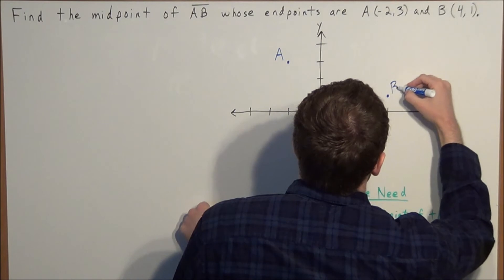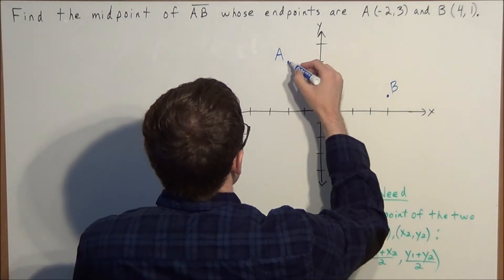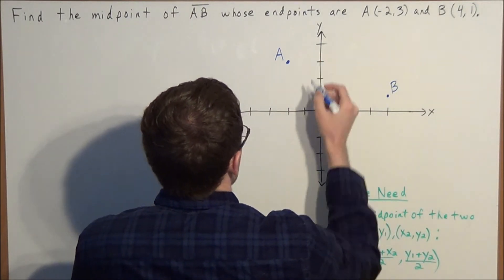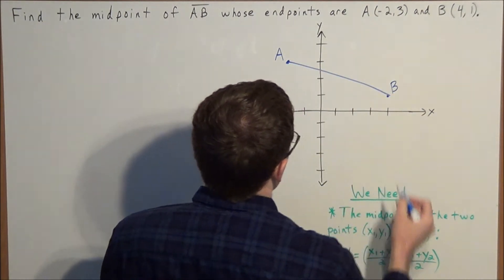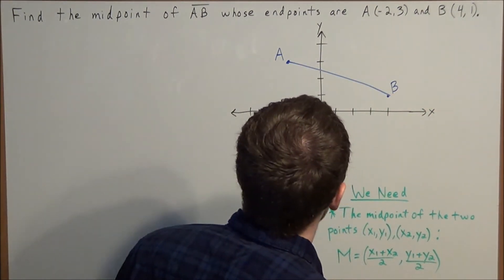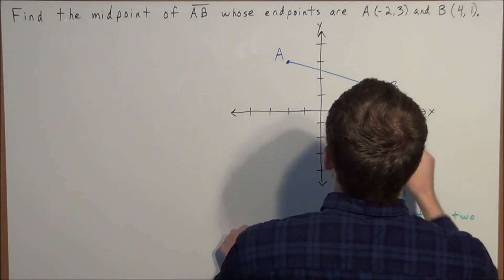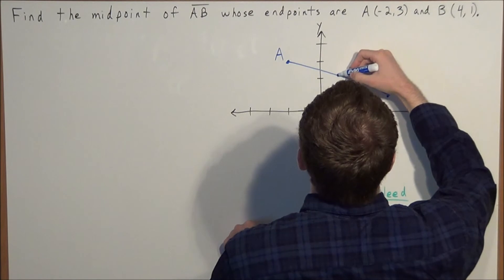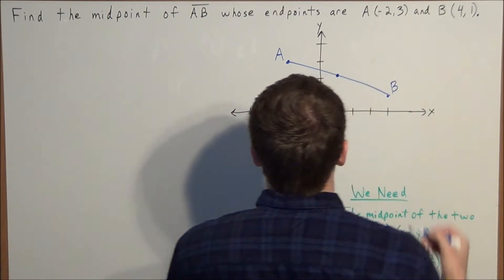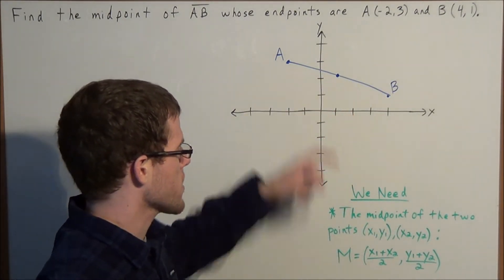And now the goal is to find the midpoint of line segment AB. So next we can connect these two points to form line segment AB. And now the midpoint will fall somewhere in this region here. So it's always good to get a general sketch of what this should look like.